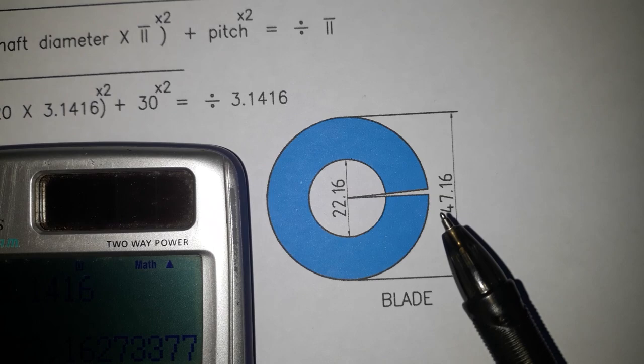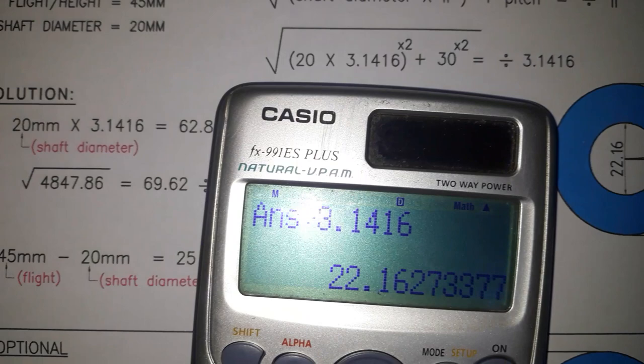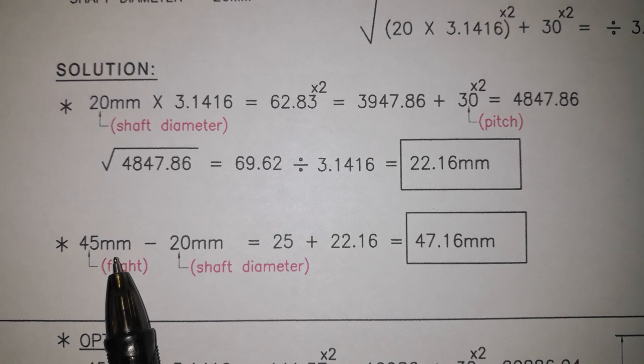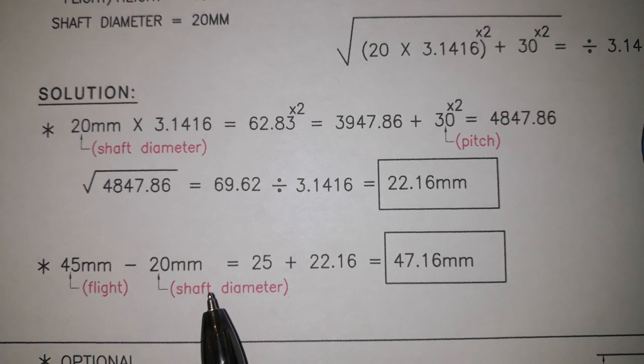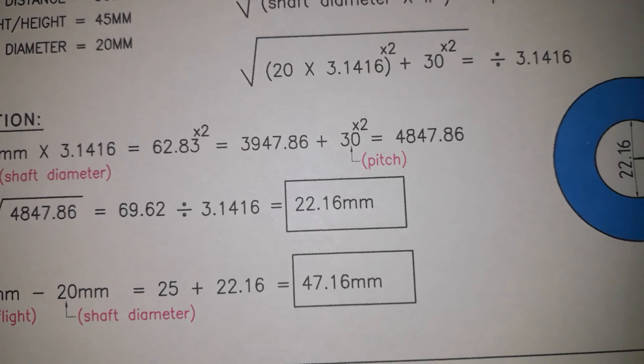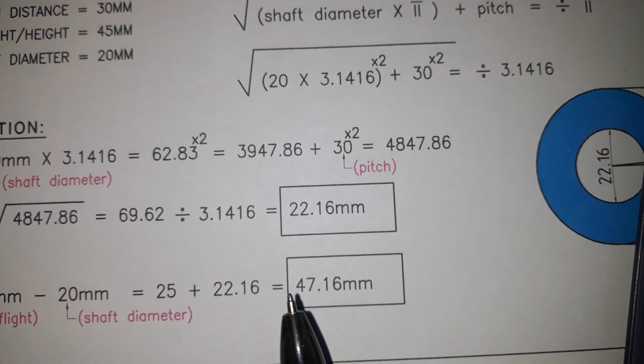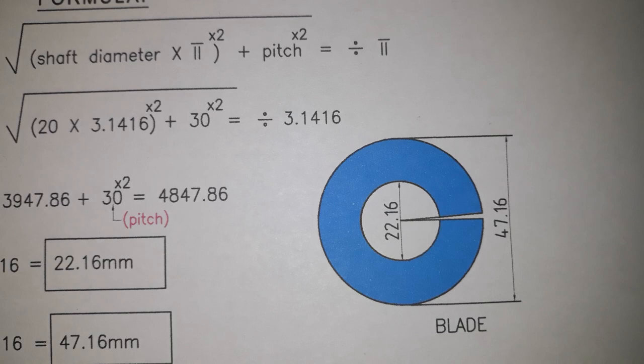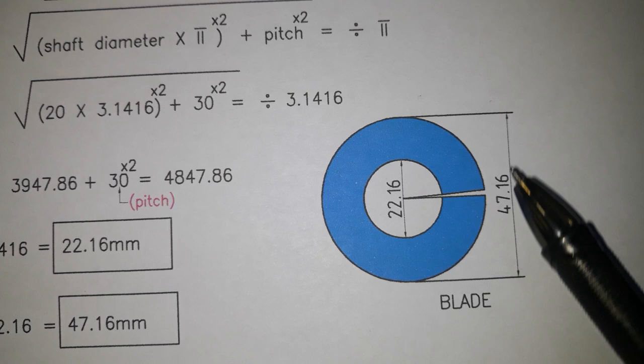Let's calculate the outside diameter 47.16mm. We have 45mm of flight minus 20mm shaft diameter equals 25mm, plus our inside diameter which is 22.16mm. The answer is 47.16mm.